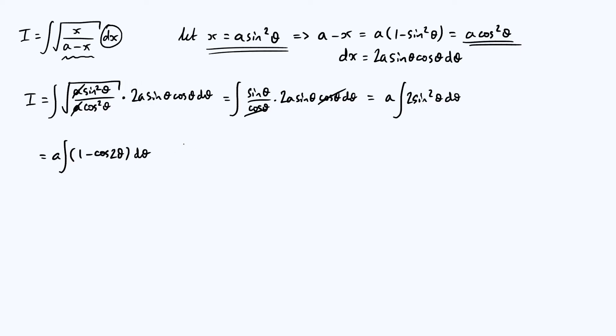And then you can just directly integrate this term by term. So you've got your pre-factor of a. The 1 just integrates to theta. Cos of 2 theta integrates to a half sine of 2 theta. So we get this factor of a half by applying the chain rule in reverse. And the cos becomes a sine. And then you've got your constant of integration, which I'm going to call c.